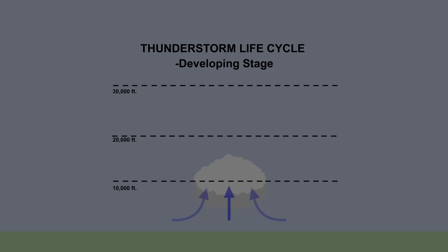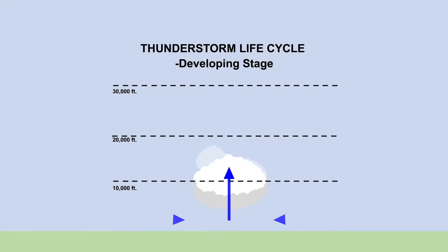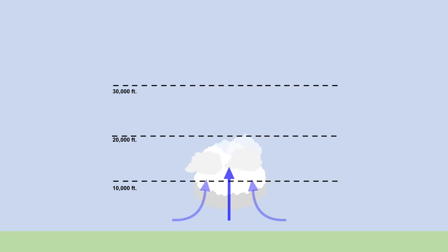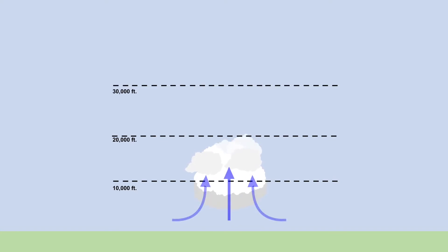Once a thunderstorm is created, it goes through a life cycle of three stages. The first is called the developing stage. In the cumulus or developing stage, the continuous updraft or lifting of air into the upper atmosphere — again caused by rising terrain, unequal warming of the earth's surface, or cold and warm fronts coming together — cools the air and condenses the water vapor within the air into water droplets or ice crystals.